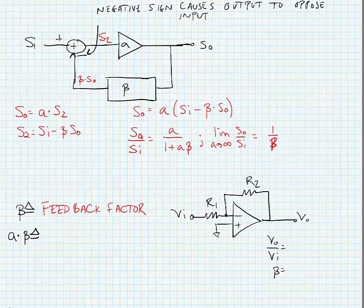A times beta is called the loop gain. This is the gain as we transit one time around the loop in the circuit.